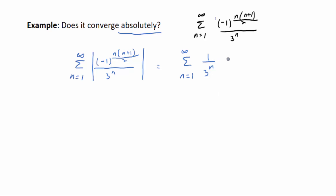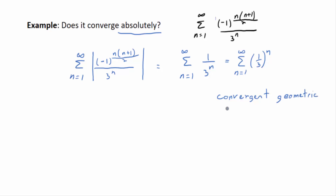That's a geometric series. If you rewrite it as the sum of (1/3)^n, it's easy to see that r = 1/3. Since |r| = 1/3 is between -1 and 1, this is a convergent geometric series. Therefore the original series is absolutely convergent.